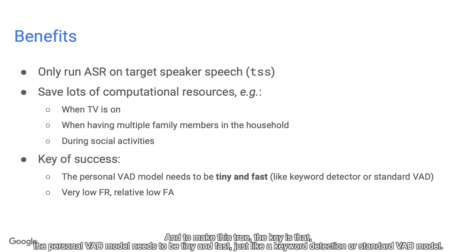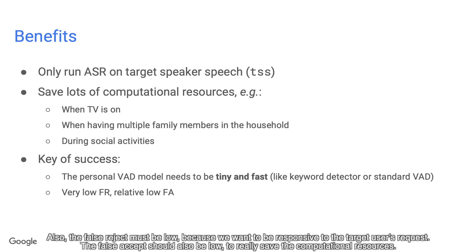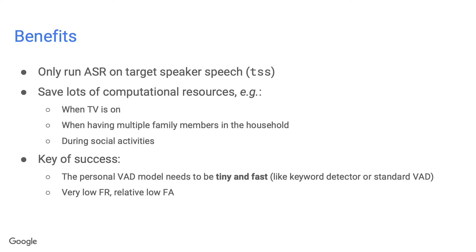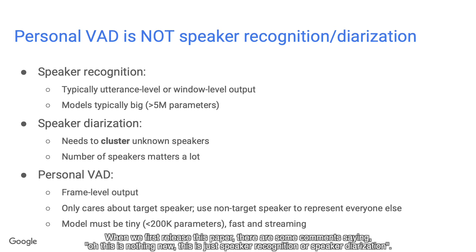To make this work, the key is that the Personal VAD model needs to be tiny and fast, just like a keyword detection or standard VAD model. Also, the false reject rate must be low because we want to be responsive to the target user's requests, and the false accept rate should also be low to truly save computational resources. When we first released this paper, there were some comments saying this is nothing new — this is just speaker recognition or speaker diarization.